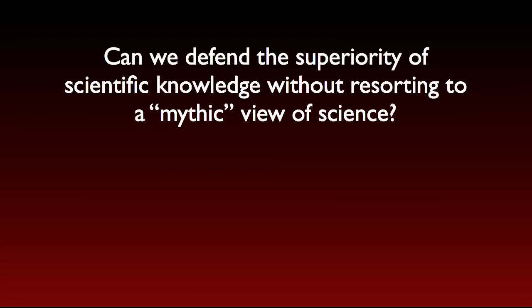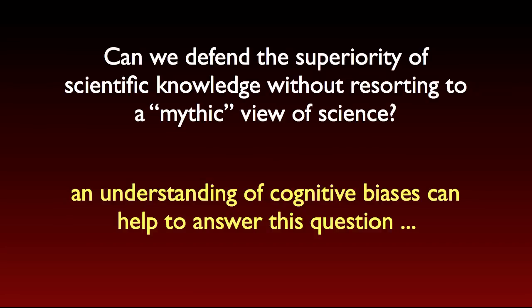For those who want to defend the superiority of scientific knowledge, the philosophical challenge is how to argue for this without defaulting to the naive, mythic view of science and scientific reasoning that has been so thoroughly debunked by scholars. As a philosopher of science, I'm in this camp — this is a challenge for me. I cringe when I hear pro-science types make broad pronouncements: science is about the search for universal law, science is about causal explanations, science is about testing hypotheses that make falsifiable predictions. You can find exceptions to all of these without looking very hard. Yet I still think there's something special about scientific knowledge. What I do think — and this gets us to the main point of this episode — is that an understanding of cognitive biases can give us a really useful perspective on this question.